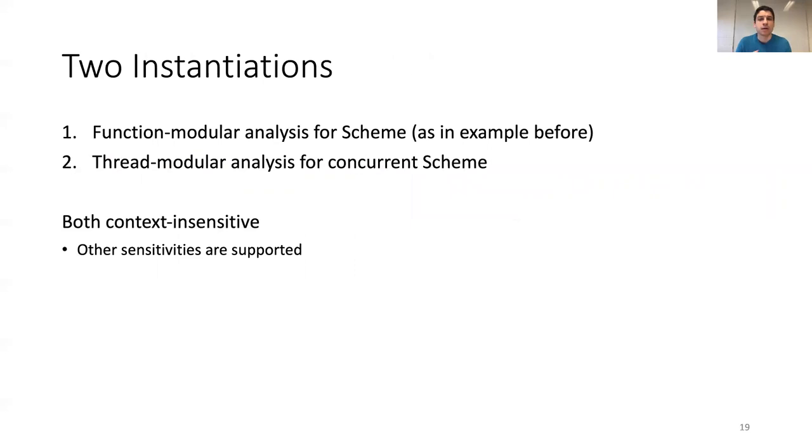So, a modular analysis can actually be very general. Up till now, we have mostly divided the program into functions, the little example program, but also, the program can be divided into threads or files, for example. And we have created two instantiations, a function modular analysis and a thread modular analysis. We have made them both context insensitive, so for every function or thread, there will be one component, but other sensitivities are readily supported as well.